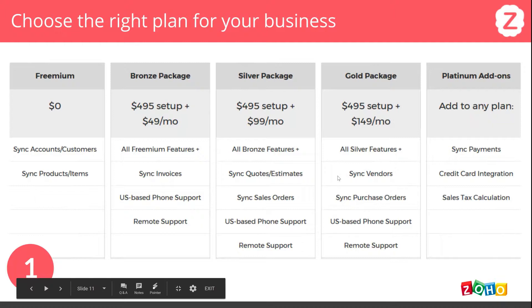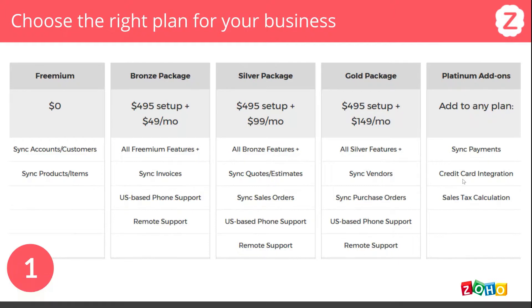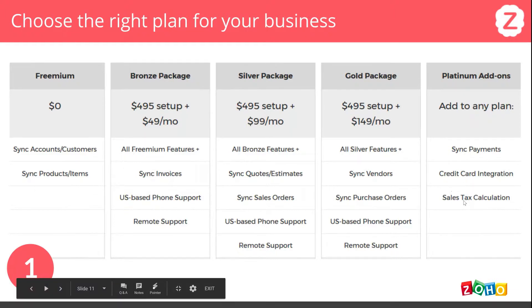The Gold package allows you to sync purchase orders and vendors. Zoho CRM, as you might know, has purchase orders and vendors. You can add to any plan if you want to sync payments. With every version from Bronze and higher, you can sync the balance of an invoice. The add-on is to sync individual payments. The reason it's an add-on is because the payment module is not a module in Zoho CRM — it would be a custom module, and you can only do that with the Enterprise version of Zoho CRM. It's a one-time add-on for us to deploy the payment module and sync it to QuickBooks.